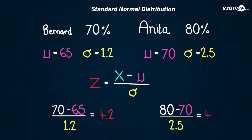Now we can compare the scores. After standardizing, we can see that Bernard did better compared to his class and his test. So relatively, Bernard performed better than Anita, because it could be that his test was harder.